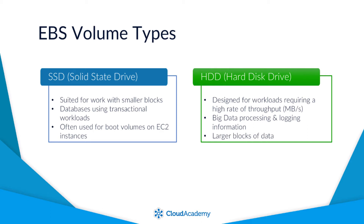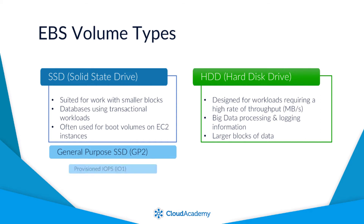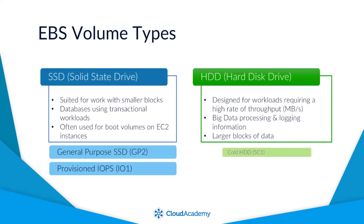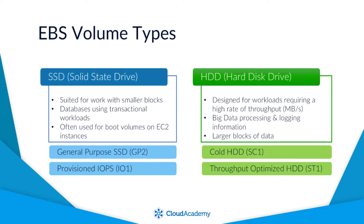Looking at these volume types further, SSD and HDD volumes can be broken down into the following: General Purpose SSD, known as GP2, and Provisioned IOPS, known as IO1. And Cold HDD, known as SC1, and Throughput Optimised HDD, known as ST1.